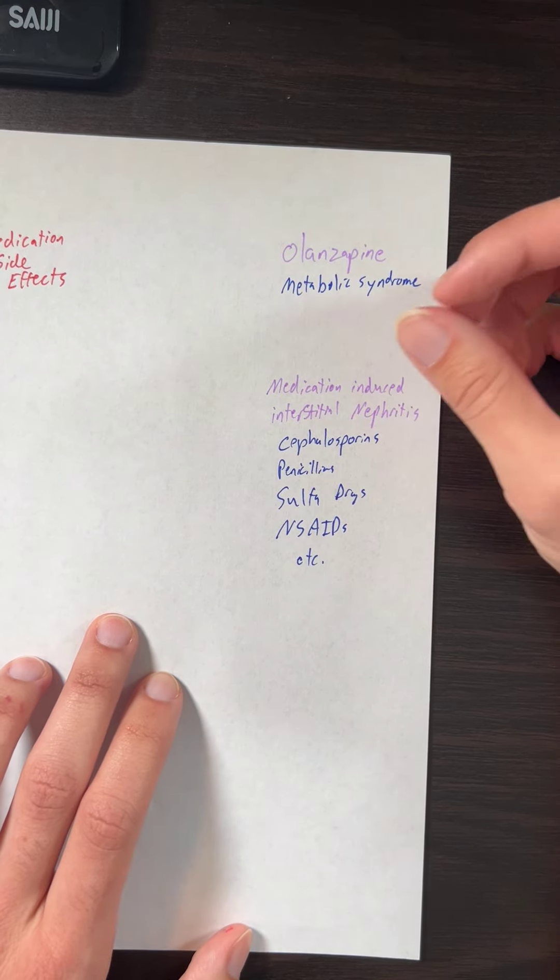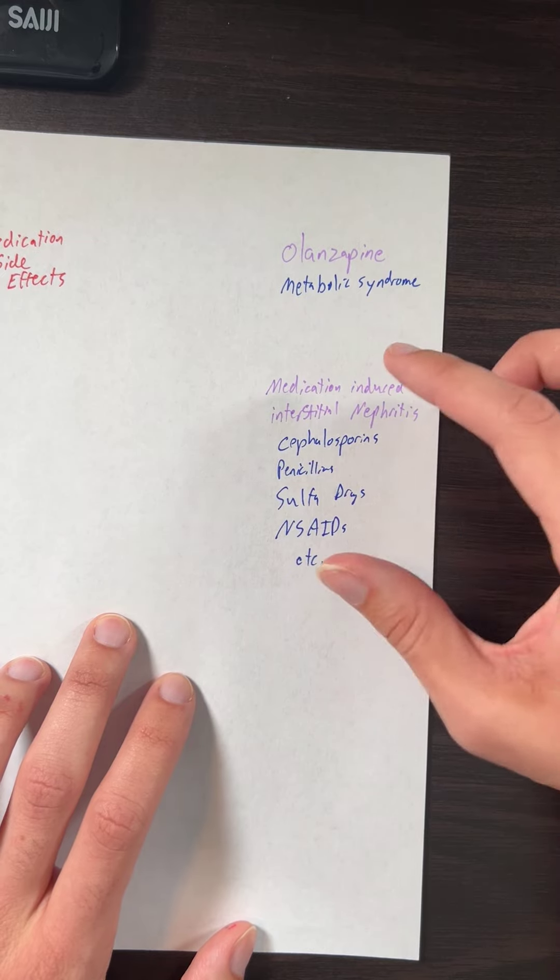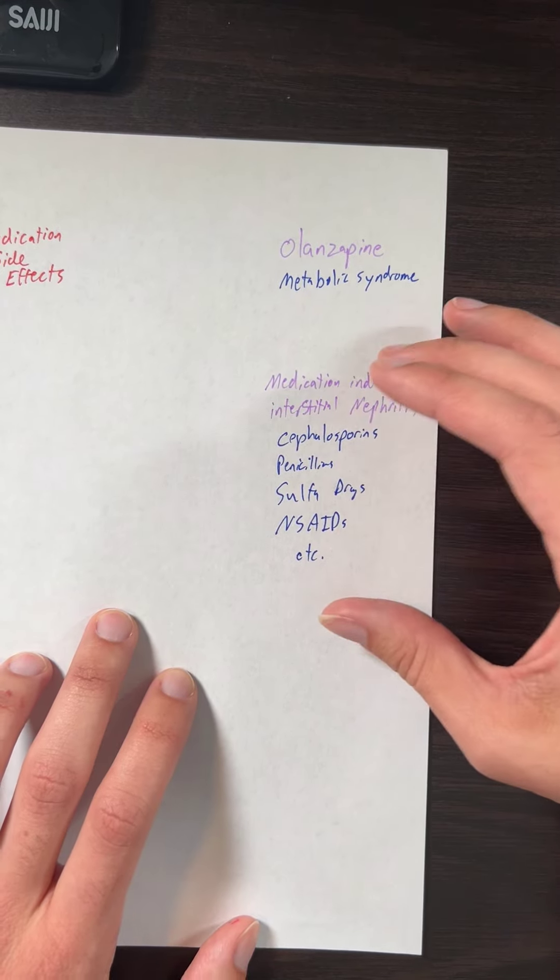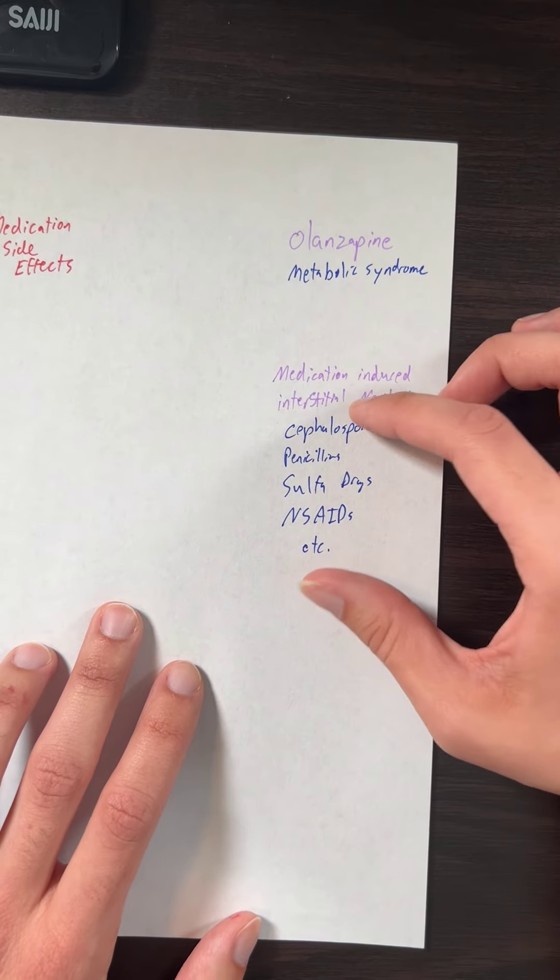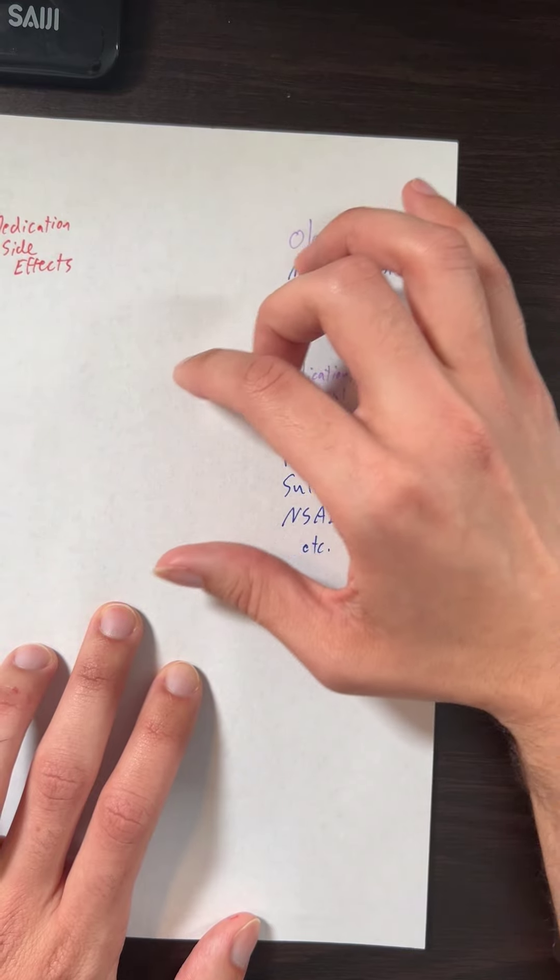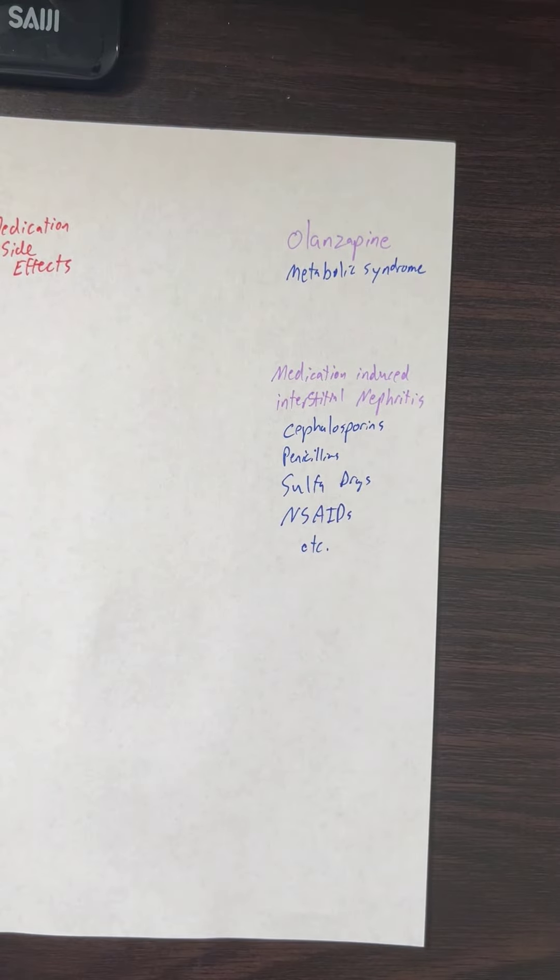There are different ways to go after this question and concept. For instance, interstitial nephritis can be caused by a series of medications. What question writers really want to know is, do you know all the things that can cause nephritis? If I give you A, B, C, D, E—five medications where four don't cause nephritis but one does—